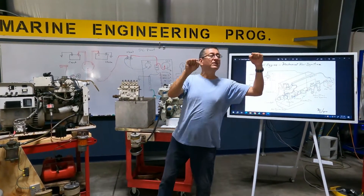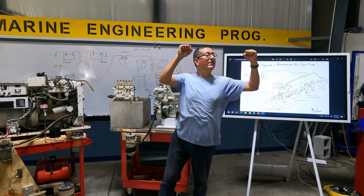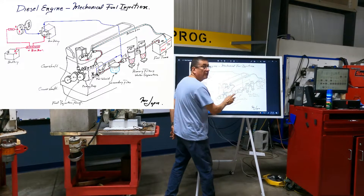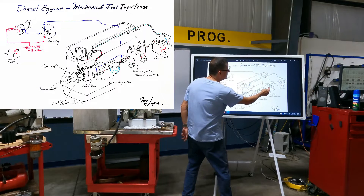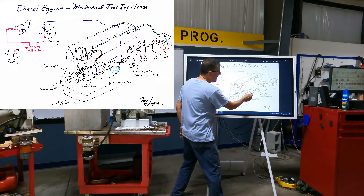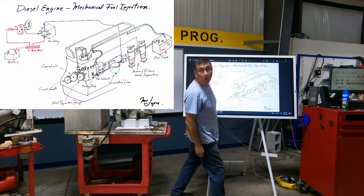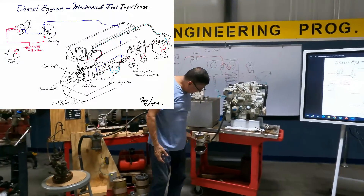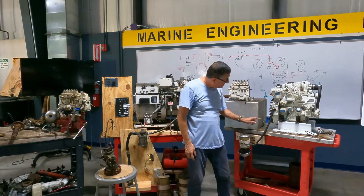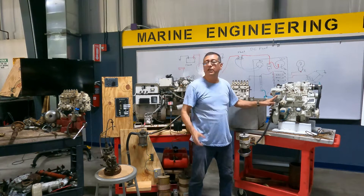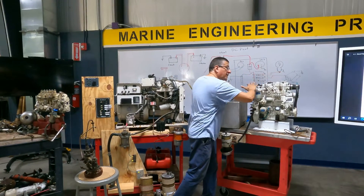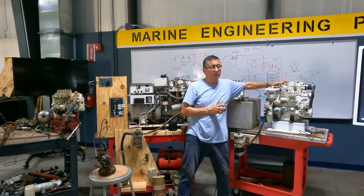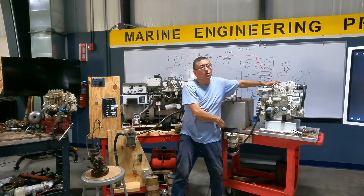When piston number one is at top dead center, plunger one is at top dead center and sends the fuel - because I need the fuel at that moment. Let's refresh the picture. Fuel flows from the fuel tank through the water separator filters. In this particular case there are two water separator filters - these are primary filters or water separators. After that, you have a secondary filter. The secondary filter is normally bolted on the engine block area.